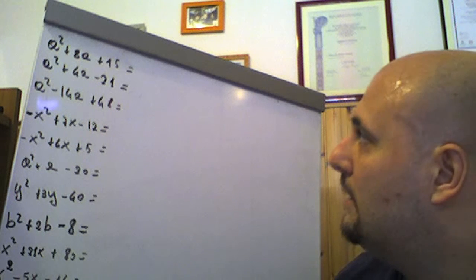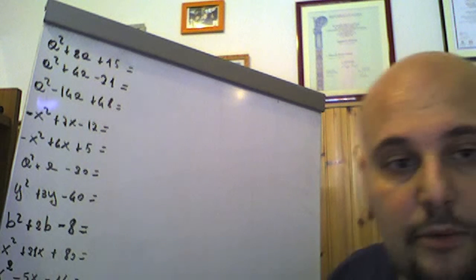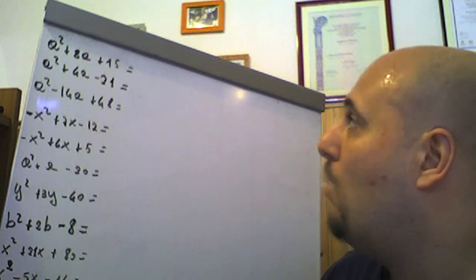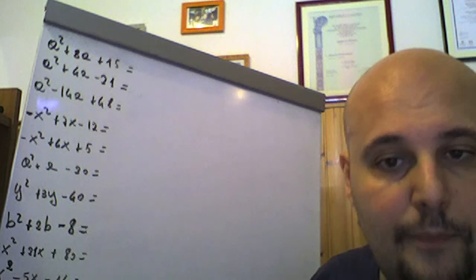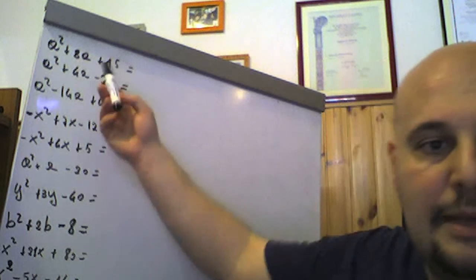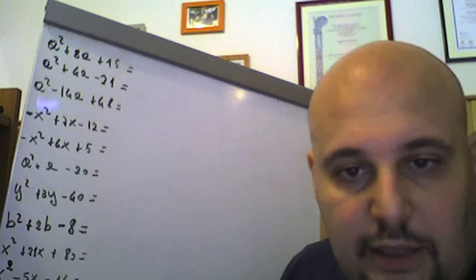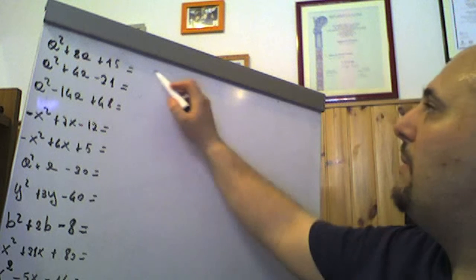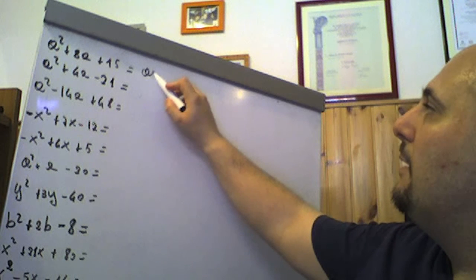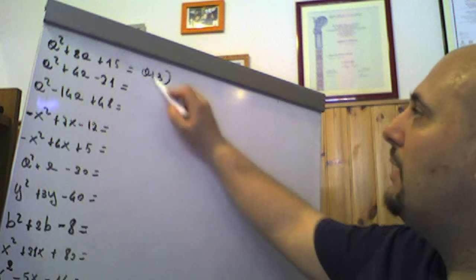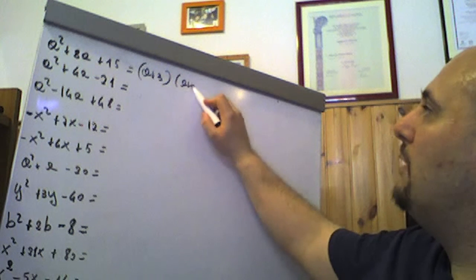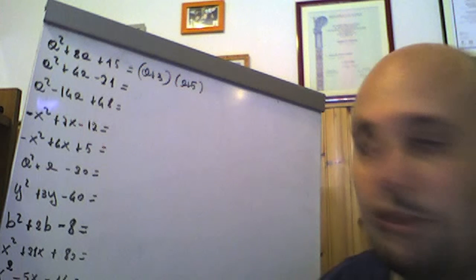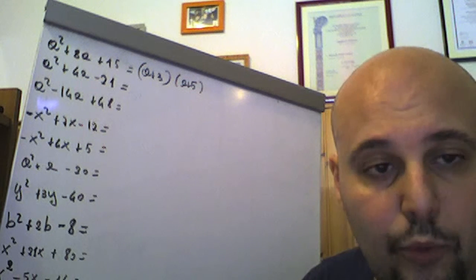Cominciamo dal primo: abbiamo a² + 8a + 15. Come al solito guardiamo il coefficiente del termine noto 15, che è 5 per 3. Quindi abbiamo (a + 3)(a + 5) come scomposizione di questo a² + 8a + 15.